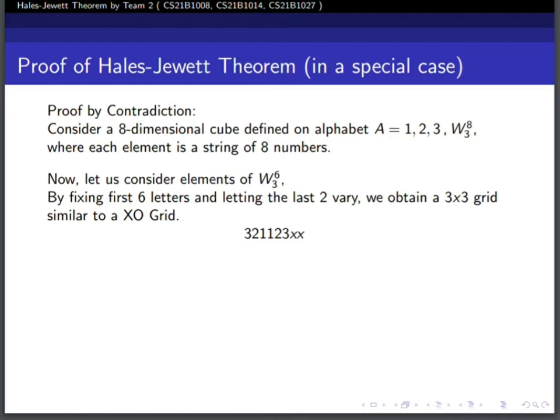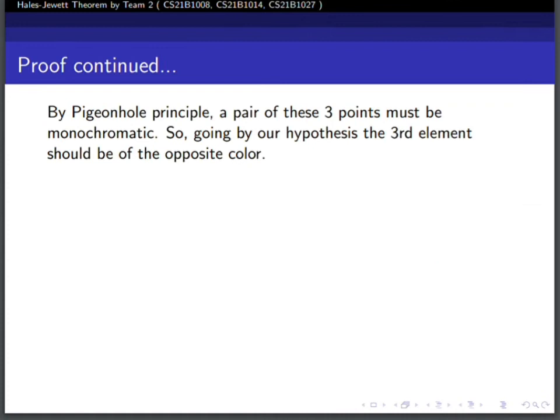If I fix the first six elements and let the last two vary, I get a 3×3 grid. Consider positions 1 1, 1 2, and 2 2. By the pigeonhole principle, two must be colored the same, and since they're part of the same combinatorial line, the third element must be colored opposite to avoid forming a monochromatic line. Hence we can classify all points into six different classes.